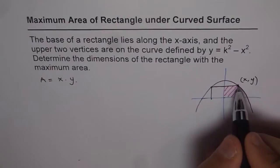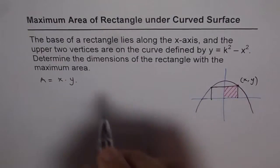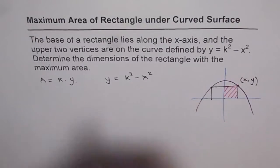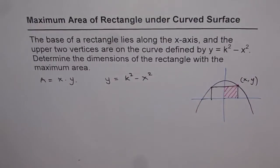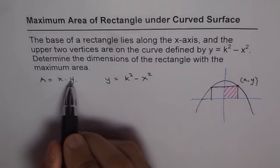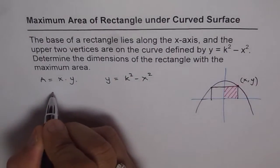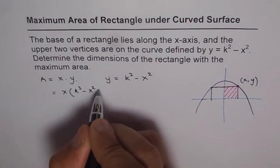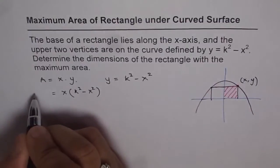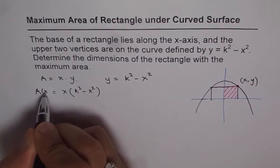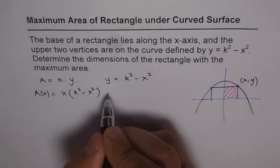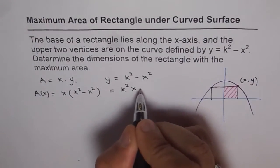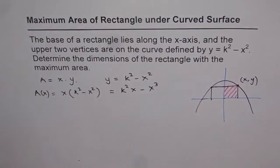Since the point (x, y) lies on the graph, we have y = k squared minus x squared. Substituting this value of y into the area expression gives us: A = x times (k squared minus x squared). This is now an equation in one variable, so we can write A as a function of x: A(x) = k squared x minus x cubed.